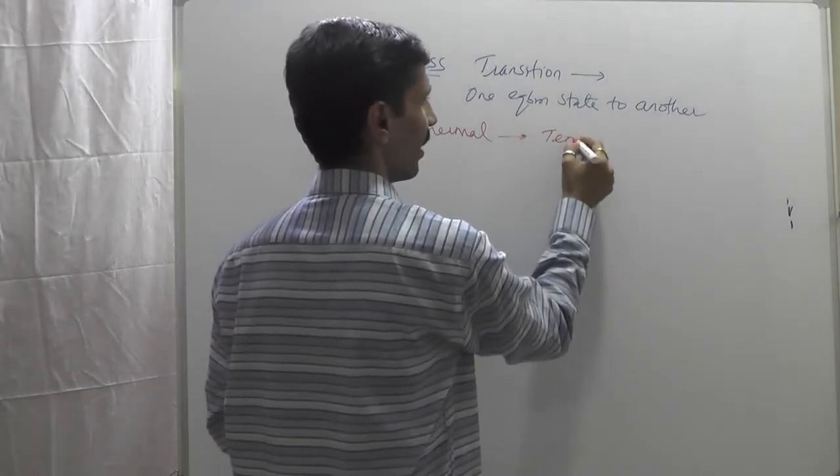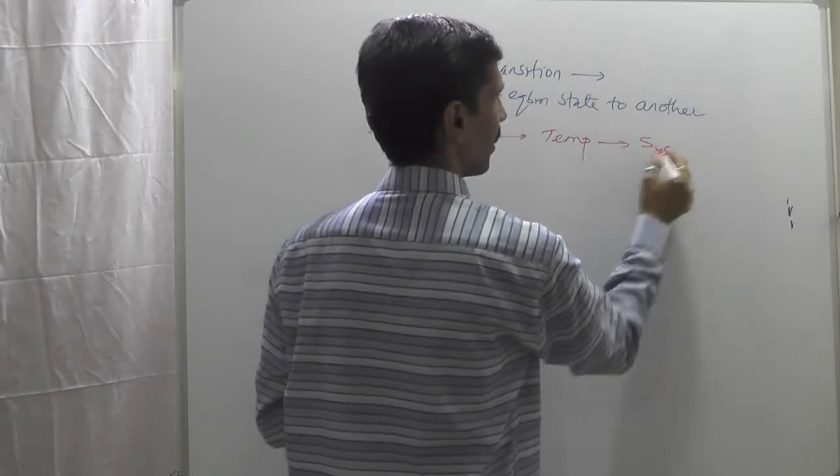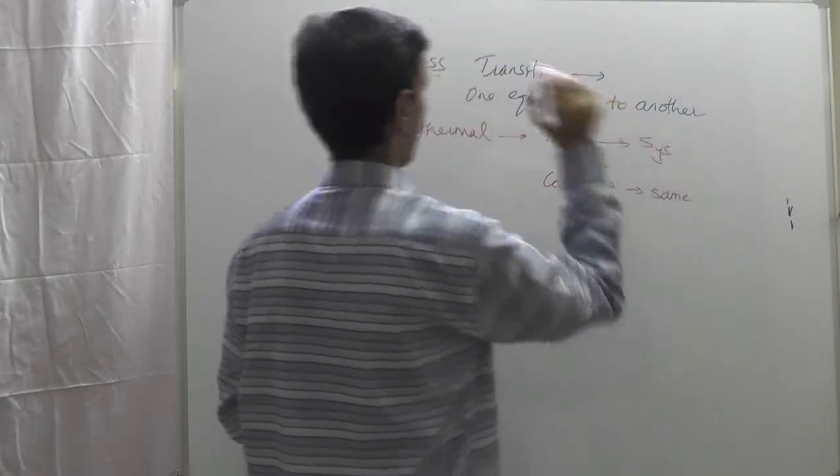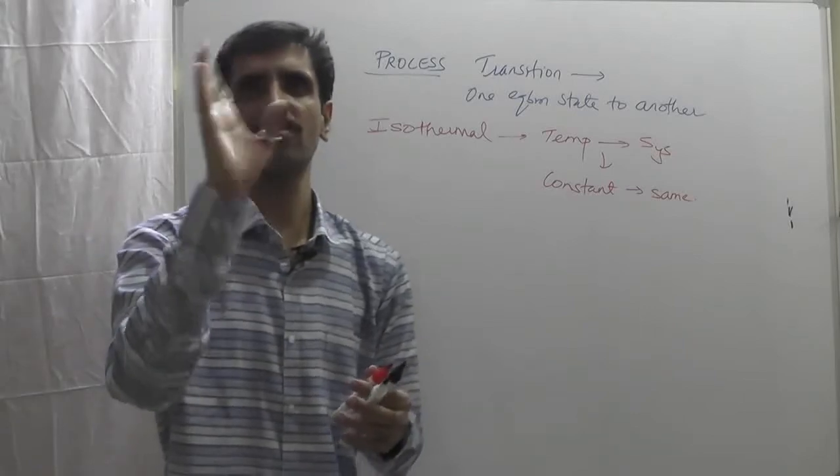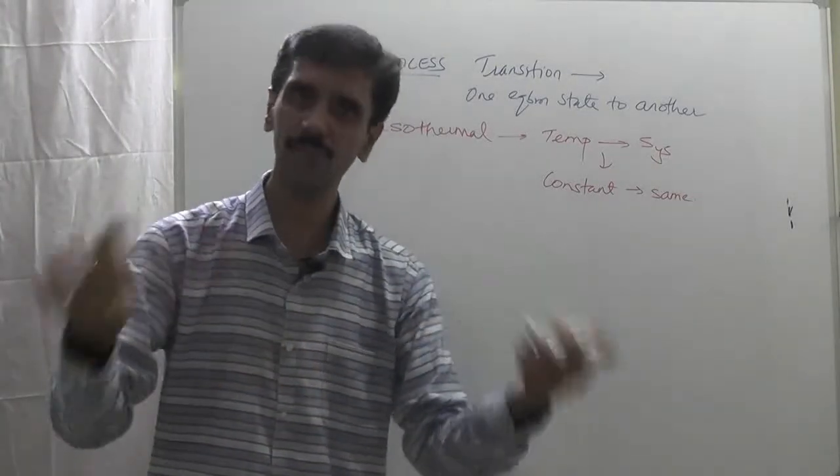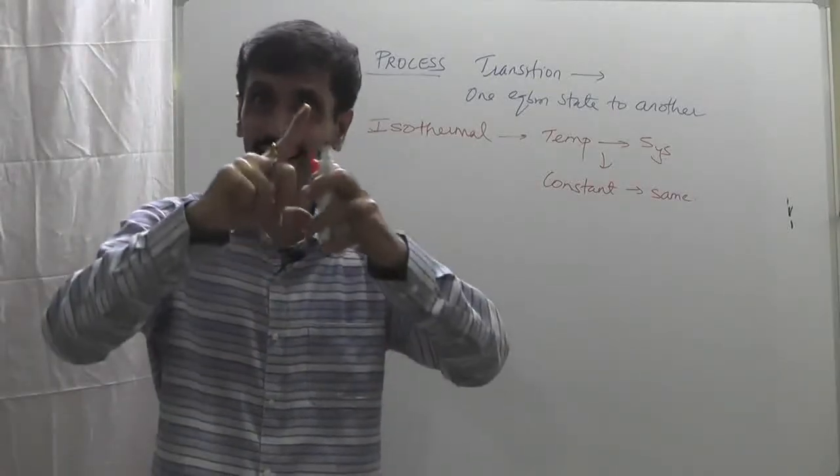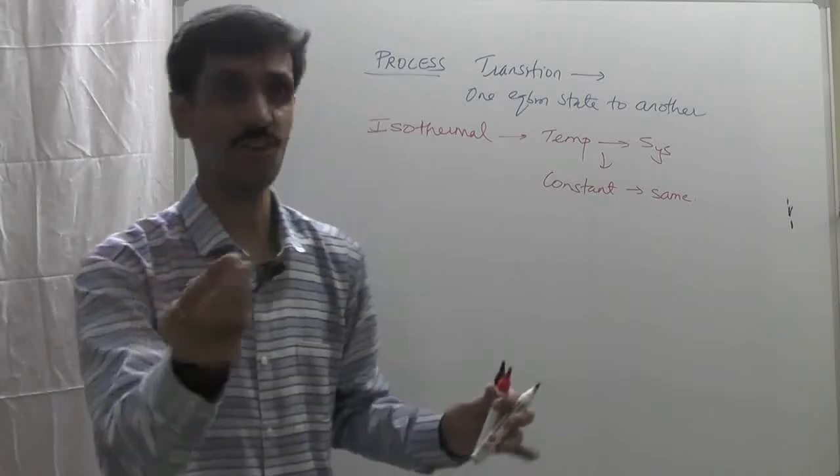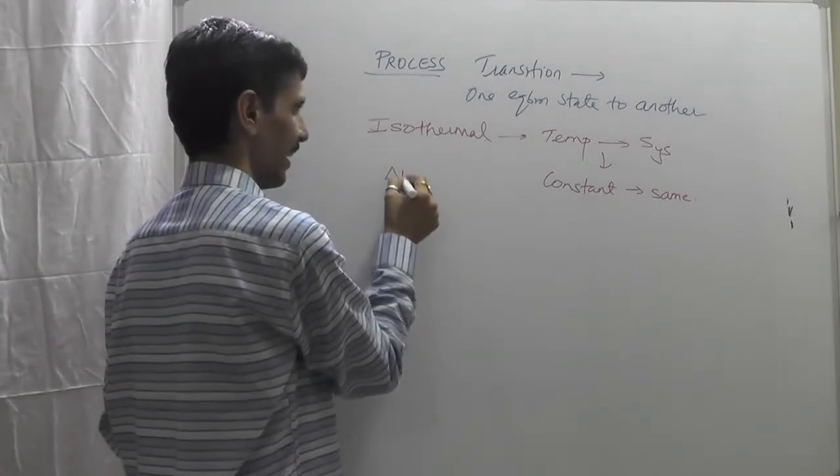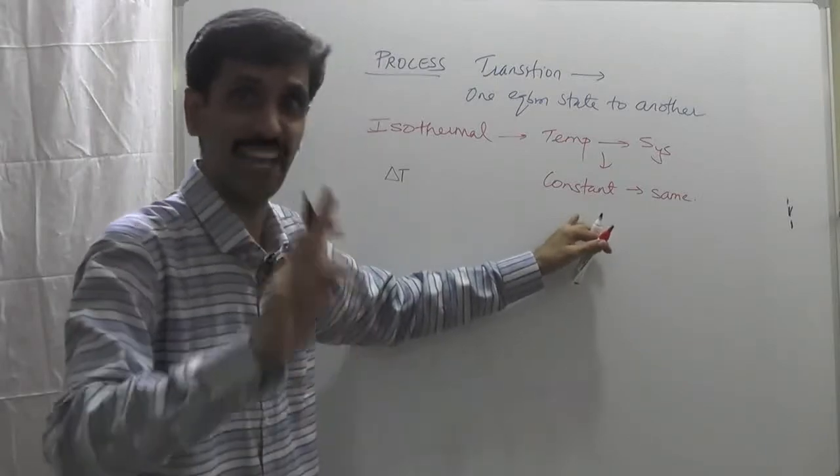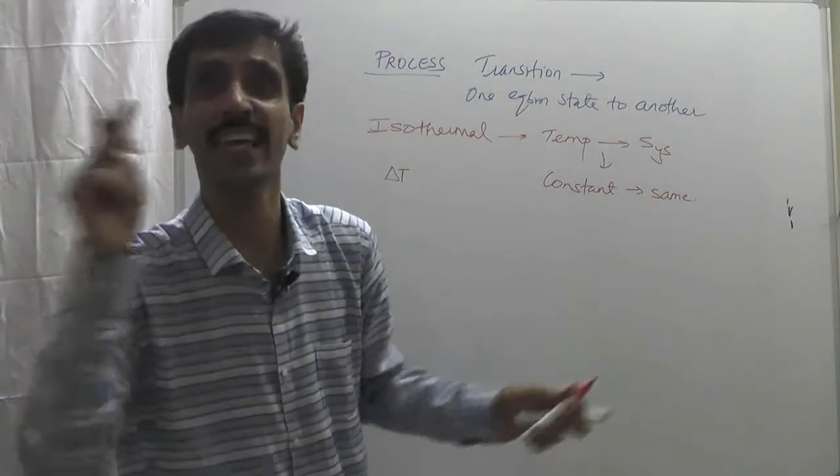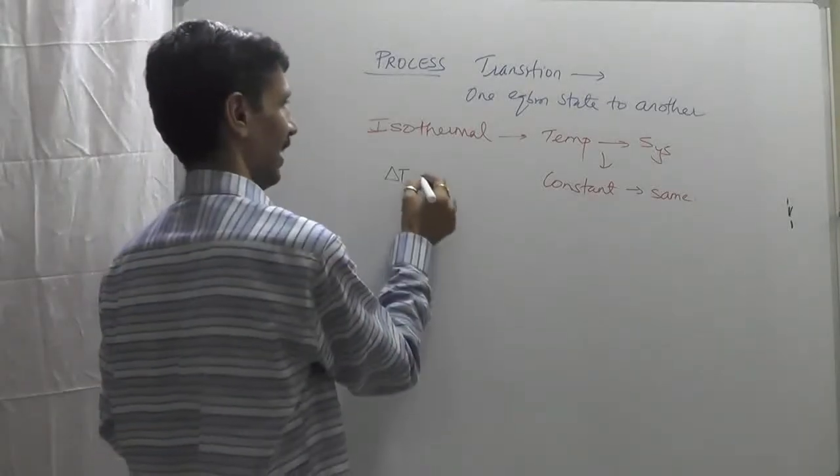So in an isothermal process, the temperature of the system remains constant or same. A few minutes back I already explained what you mean by a state function. Its symbol delta means difference, means change. And here the change is not happening, so accordingly we say delta T, that is change in temperature, is not going to change. If it doesn't have any value, it will be equal to zero.